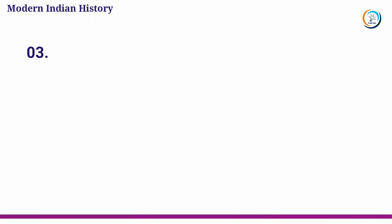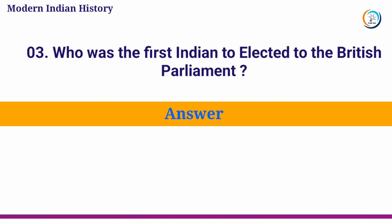Who was the first Indian to get elected to the British Parliament? Answer: Dada Bhai Naoroji.